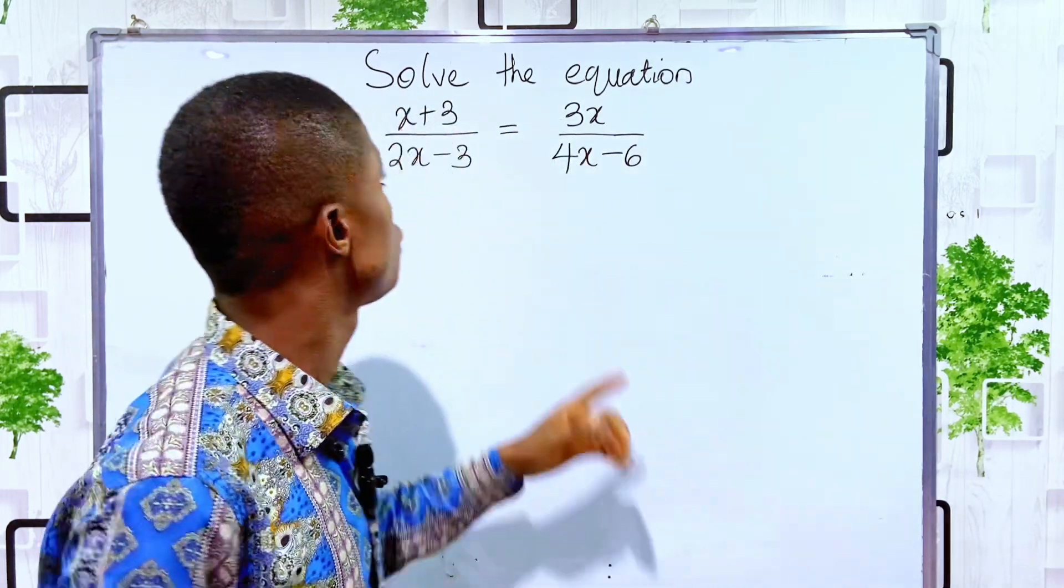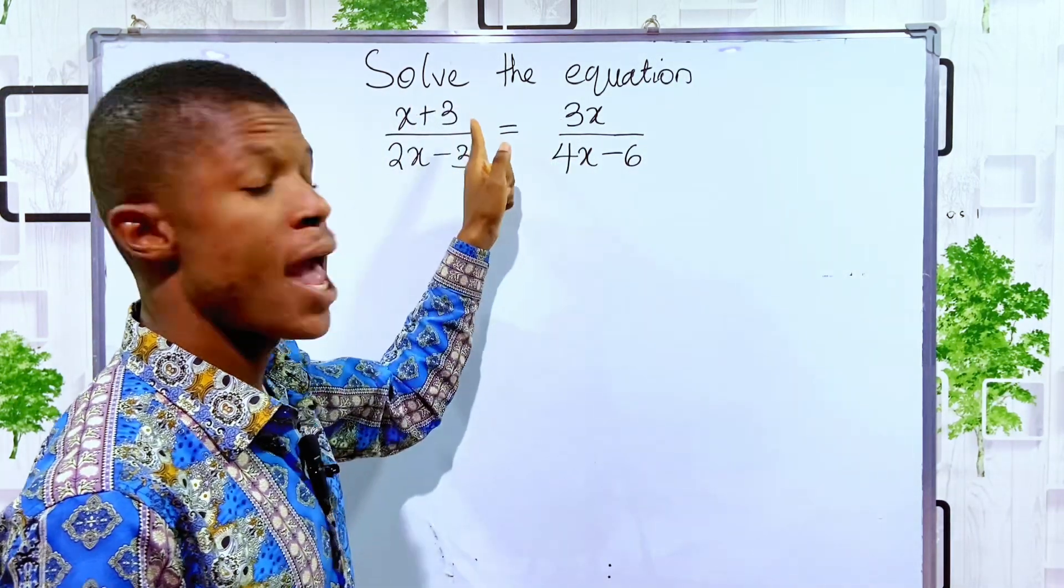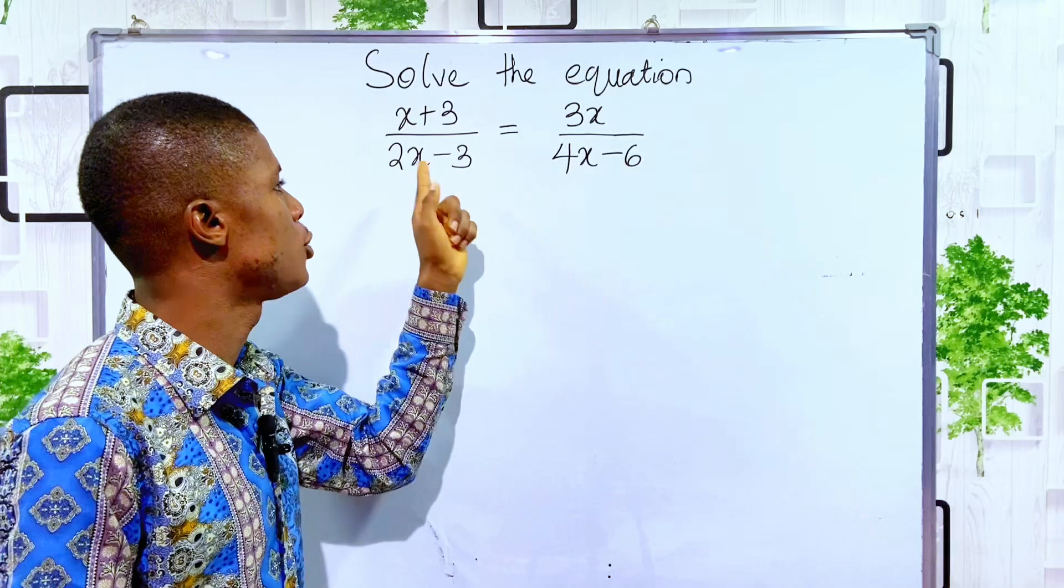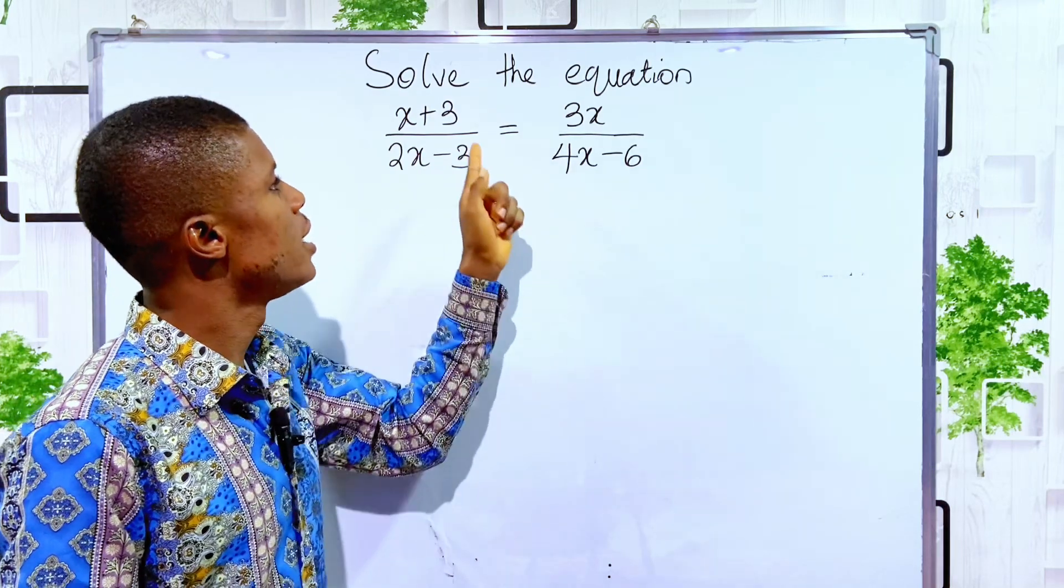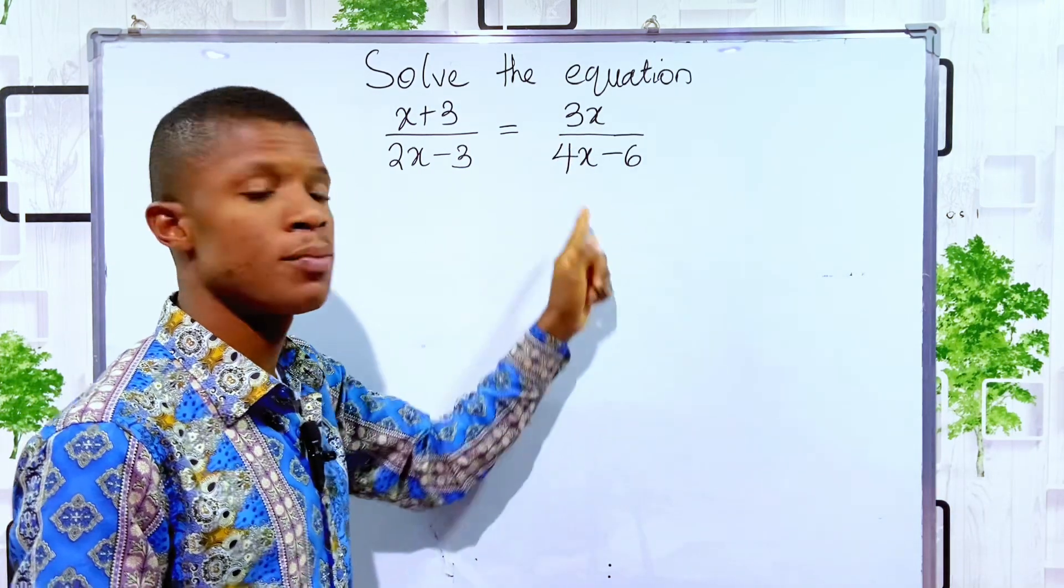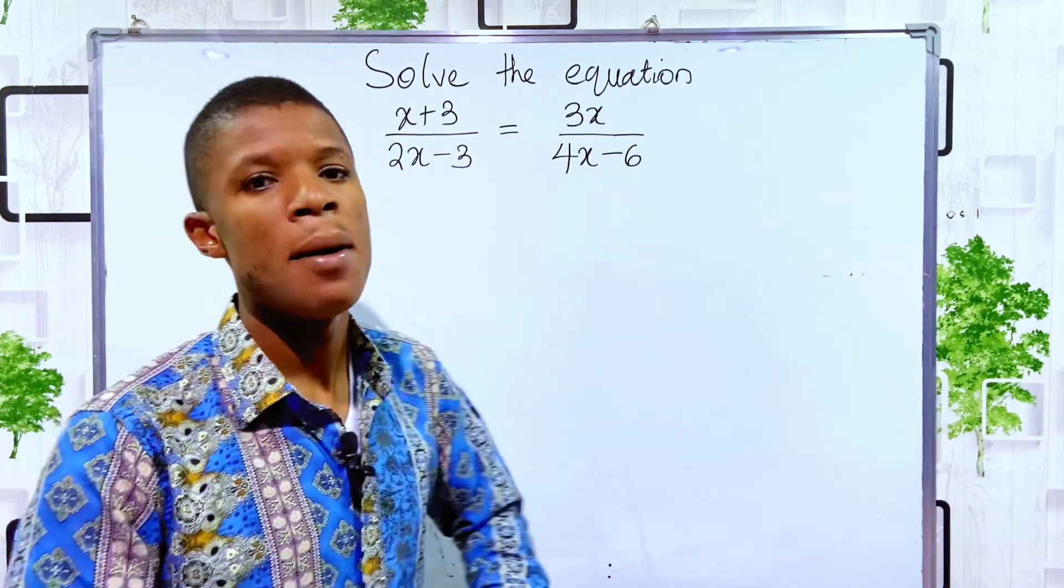Okay, here we are told to solve the equation x plus 3 divided by 2x minus 3 is equal to 3x divided by 4x minus 6.